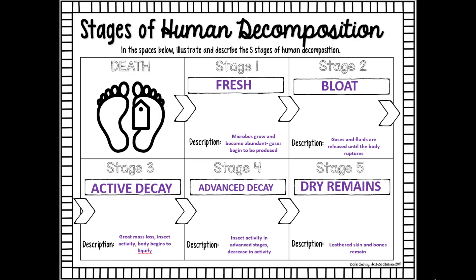In stage two, the leaked enzymes from stage one begin producing more and more gases containing sulfur compounds, and bacteria cause skin discoloration. Due to the gases being produced, the body can bloat and sometimes double its original size. Insect activity also starts towards the end of stage two, as insects begin to smell the gases and fluids being released from the body.